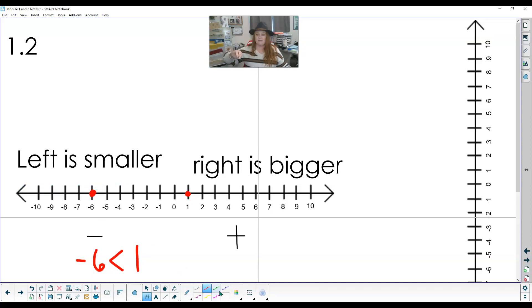So anything to the left is smaller. So then if I keep going, if I have negative 10, now it's more to the left. Now it's even smaller than both of those. Left smaller, right bigger.